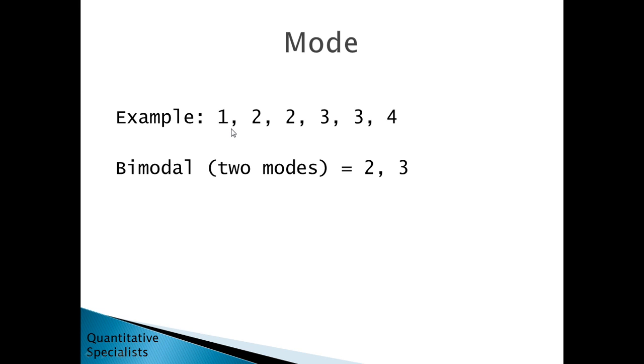Another example with the mode: if we had the values 1, 2, 2, 3, 3, 4, notice there's two values that each occur twice. 2 occurs twice and 3 occurs twice. So here we have two modes, which is usually referred to as being bimodal. The modes are 2 and 3.